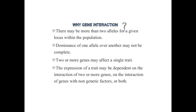The dominance of one allele over another may not be complete. In Mendel's experiment, if a plant is tall then the tall character is always expressed, and the short character is not expressed — the dominant character is more predominant. But sometimes it may occur that dominance is not the main character controlling everything. Two or more genes may affect a single trait, and the expression of a trait may be dependent on the interaction of two or more genes.